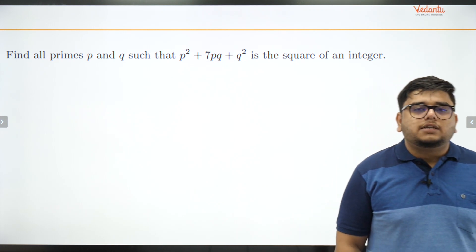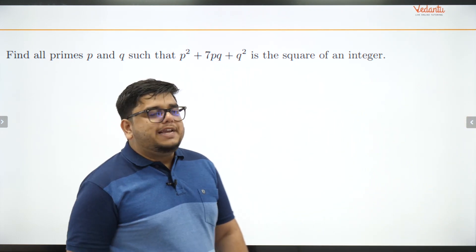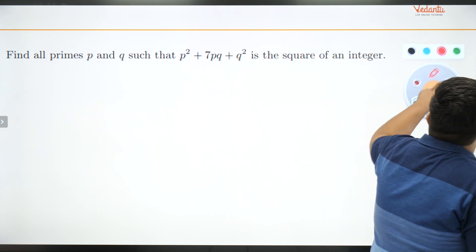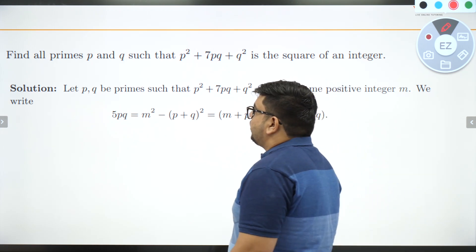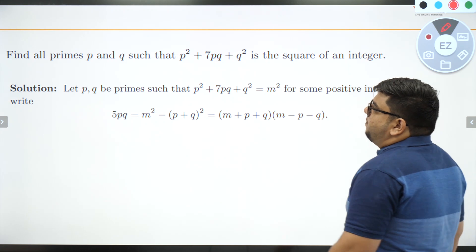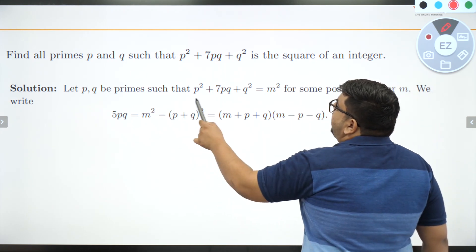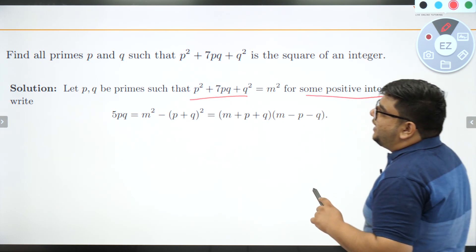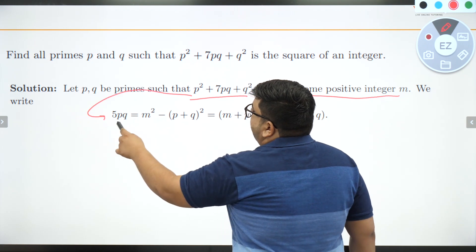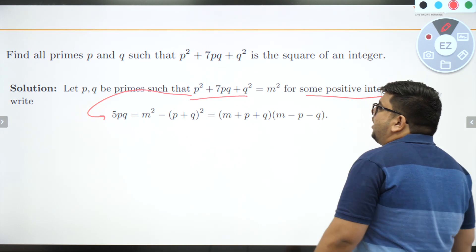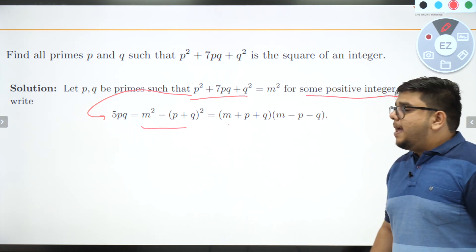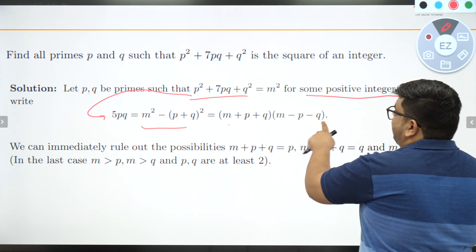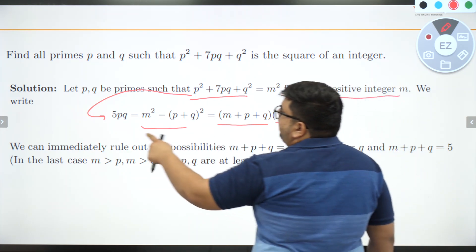The second question: find all primes p and q such that p² + 7pq + q² is a perfect square. Whenever there is a perfect square, I set that expression equal to m² for some positive integer m. So we have p² + 7pq + q² = m². We can rearrange this to 5pq = m² − (p+q)², which factorizes as (m + p + q)(m − p − q) = 5pq.